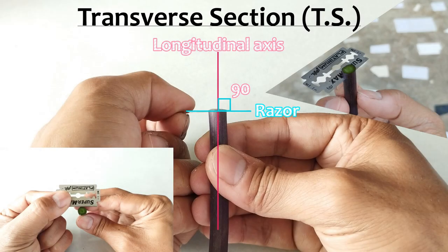Transverse section, more commonly referred to by its abbreviation TS, is that plant section made by cutting through the plant material horizontally or at right angles to its longitudinal axis. Preparing a TS of a plant material, usually a plant stem, is probably the most common lab exercise done in botany practical classes when it comes to sectioning for microscopy.